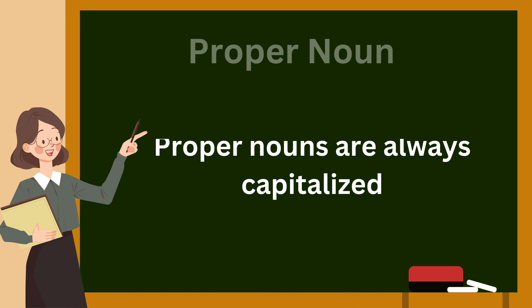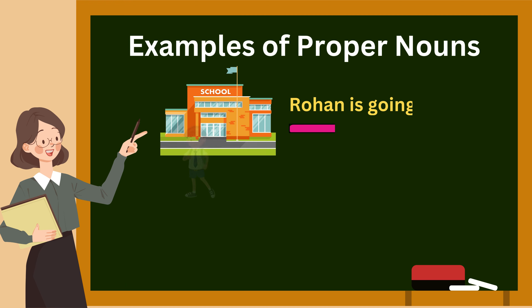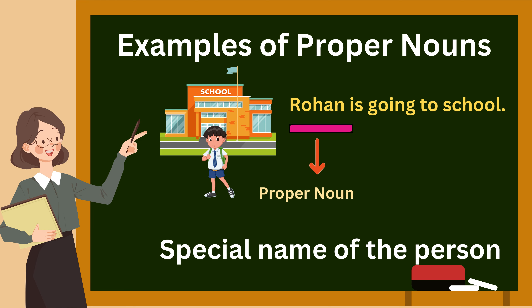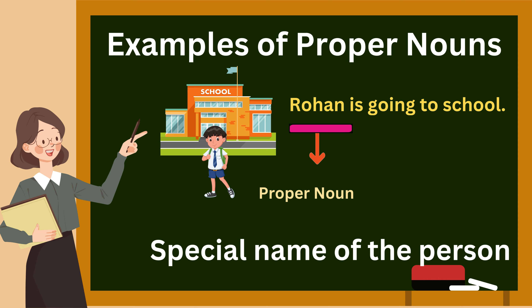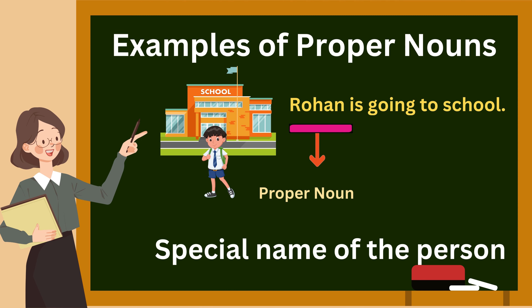For example, 'Rohin is going to school.' In this sentence, 'Rohin' is the proper noun. It is the special name of a person.